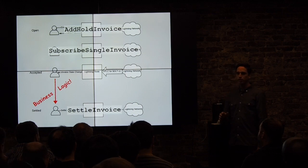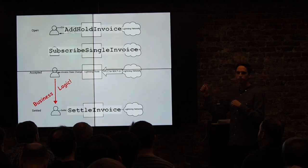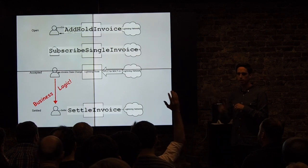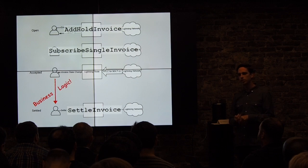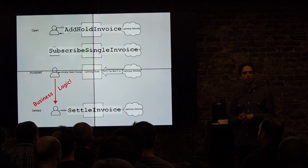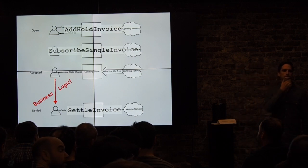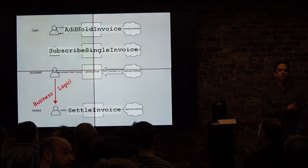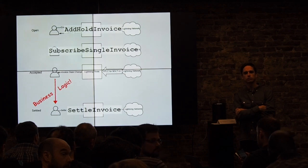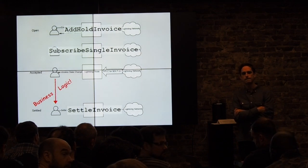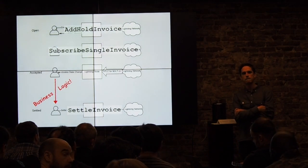Before I move to applications — questions on the delayed settlement aspect, hold invoices? What about the balance of the wallet — how is an active HTLC reflected in the balance? So it's just deducted, kind of like in limbo until it's settled. If it gets timeout canceled, then it gets the majority of the balance back.